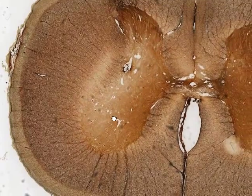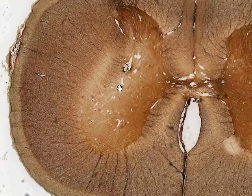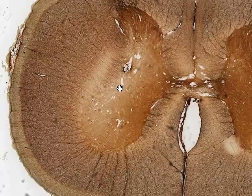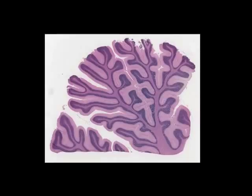That covers it for the cord. Next we'll look at another part of the central nervous system: the cerebellum. This part of the brain is chosen because the structural organization of neurons and associated material here is a little easier to understand than elsewhere, for example in the cerebrum. At low magnification, the first striking feature is this tree-like structure forming a trunk and branches, which is the white matter carrying axons to and from the cerebellum.